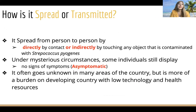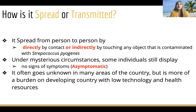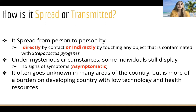How is it spread or transmitted? It spreads from person to person either directly by contact or indirectly by touching any object contaminated with Streptococcus pyogenes. Under some circumstances, certain individuals display no signs or symptoms — this is called asymptomatic.